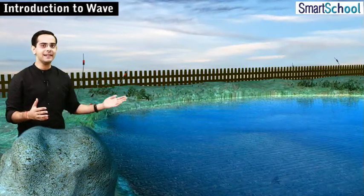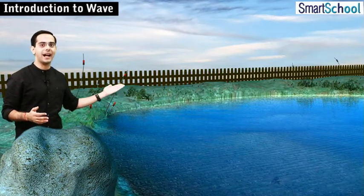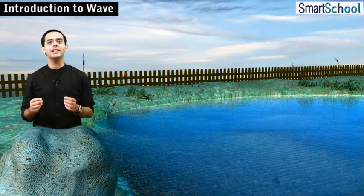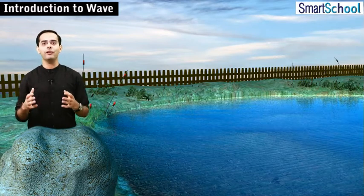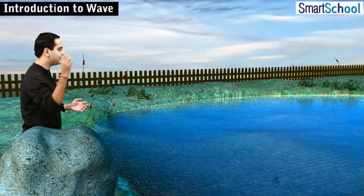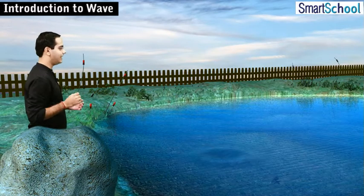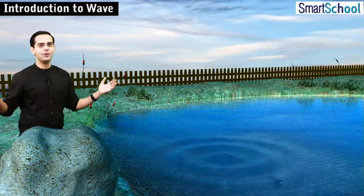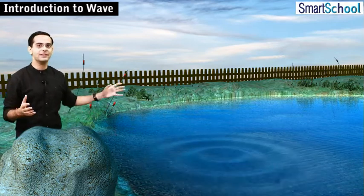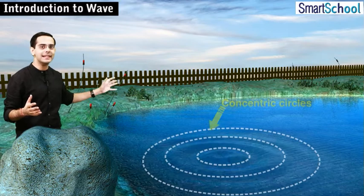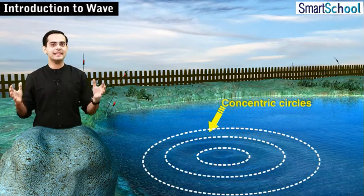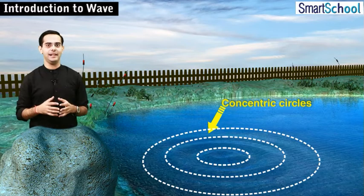Here is a very beautiful and calm lake, and here we are going to first understand the formation of a wave. What I do now is I simply throw a stone in this lake. You can see that there are certain concentric circles forming on the water surface, and these appear to move in the outward direction.